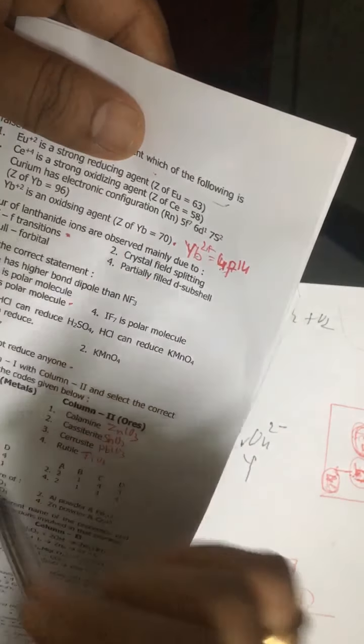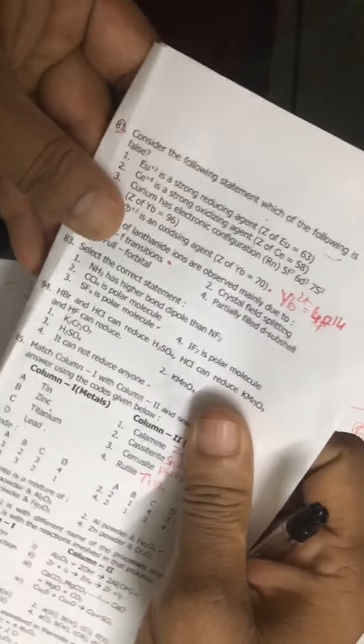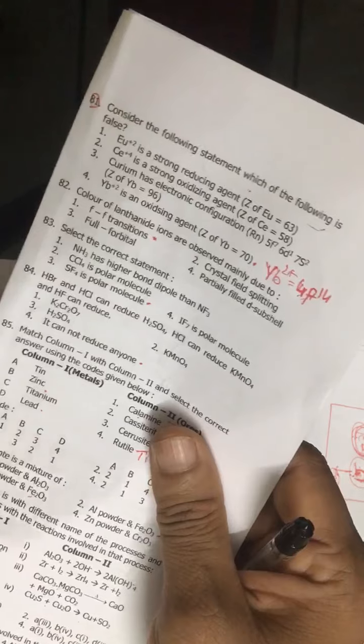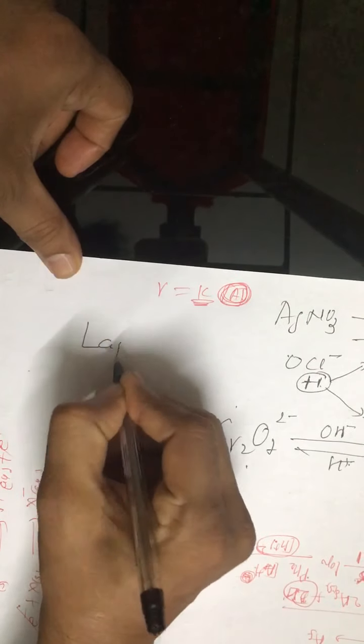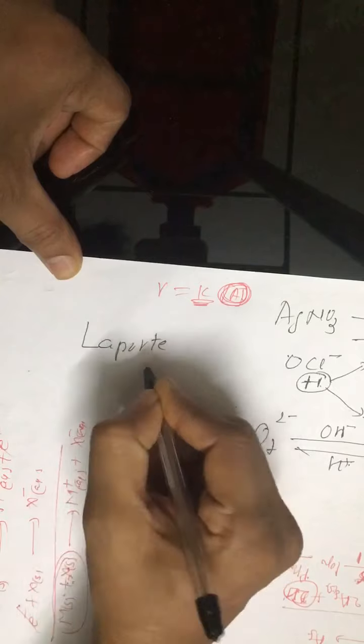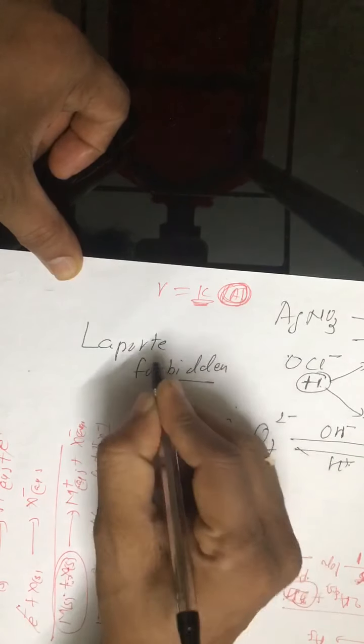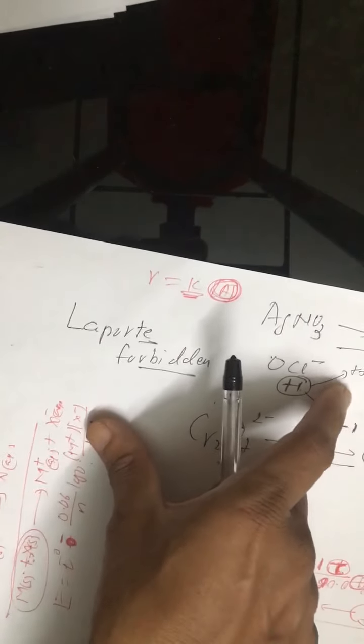Test number 82: color of lanthanide ion - lanthanoids and actinoids, it is due to f-f transition. Or this is also called Laporte forbidden transition. If you want to remember, Laporte forbidden transition, or the f-f transition. In d-block element, the reason is d-d transition. In f-block element, f-f transition. Correct answer is first option 82, 83.